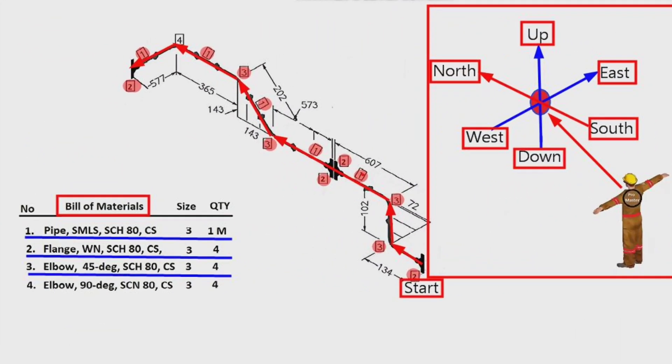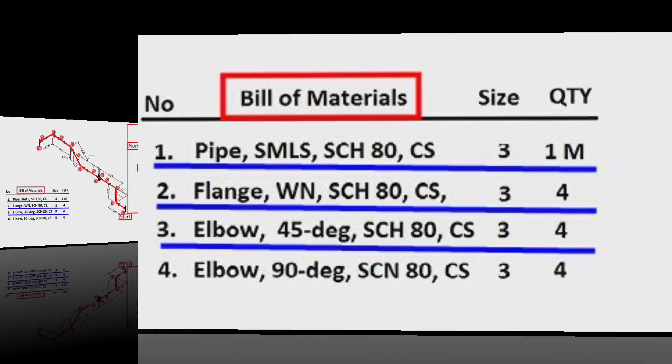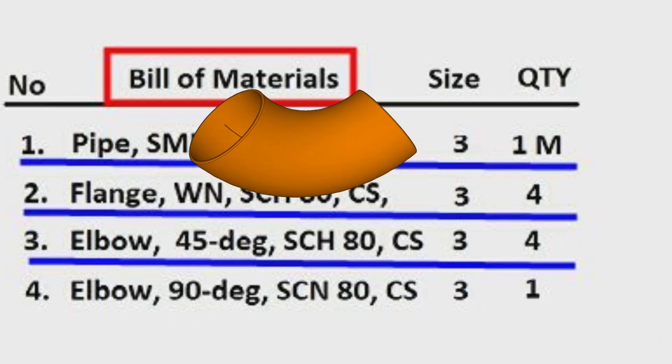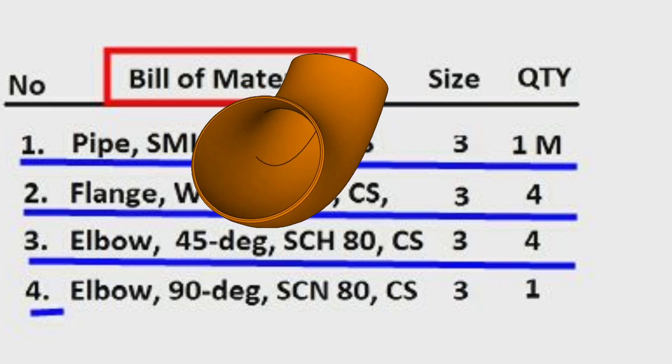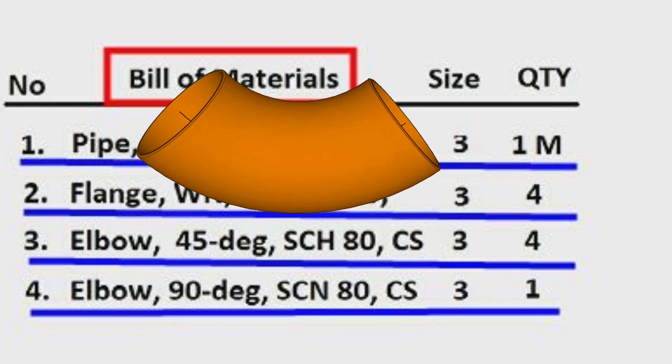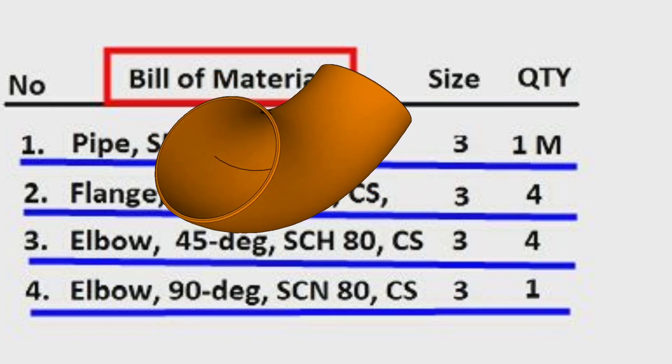Detail number four was used one place in the pipe drawing. Let's look at the material list. The detail number four, elbow 90 degree type, wall thickness schedule 80, carbon steel material, size is 3 inches. The quantity is one piece.